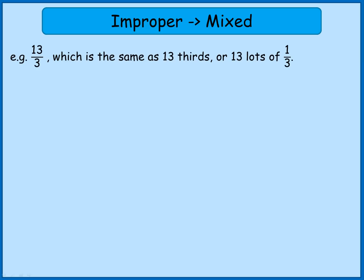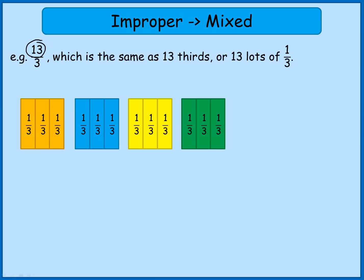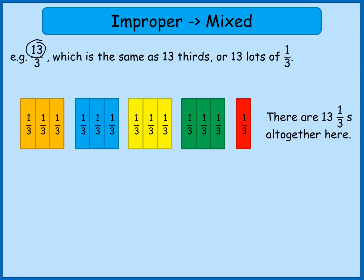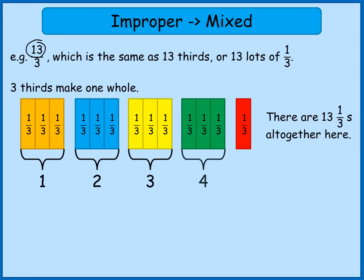Let's look at another one: 13 thirds — so 13 over 3, or 13 lots of a third. This is an improper fraction because the numerator 13 is larger than the denominator 3. Drawing them out: 3, 6, 9, 12 and one more makes 13 thirds. I've grouped them because 3 thirds makes one whole. So I've got 1, 2, 3, 4 whole ones and then 1 third left over. So I'd write 13 thirds as 4 whole ones and 1 third — changing the improper fraction to a mixed number with a whole number and then a proper fraction.